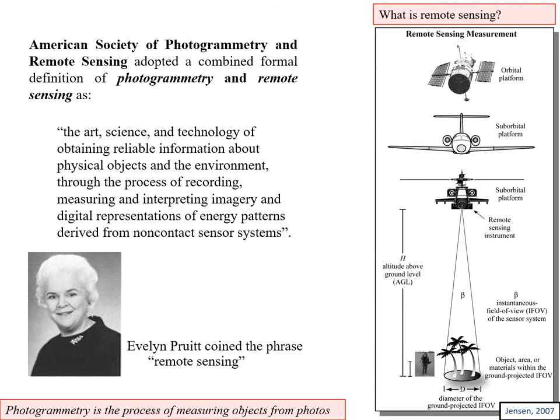For a brief definition: ASPRS, the American Society of Photogrammetry and Remote Sensing, adopted a combined definition covering both subsets. Remote sensing is the art, the science, and the technology of obtaining information about physical objects in the environment by recording, measuring, and interpreting imagery and dimensional representations of energy patterns, specifically derived from non-contact sensor systems. So it's remote — we want to develop solutions that don't require us to make measurements that contact the objects of interest.